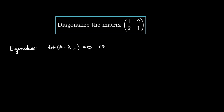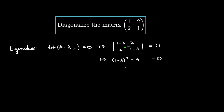We look at the general form of the characteristic equation. In our specific situation, the matrix A is given by the matrix [1, 2; 2, 1]. We're trying to solve for lambda where the determinant of (A - lambda*I) equals 0. So we have (1 - lambda) along the diagonal and 2 off-diagonal. We multiply these two together and subtract: we get (1 - lambda)² - 4 = 0.